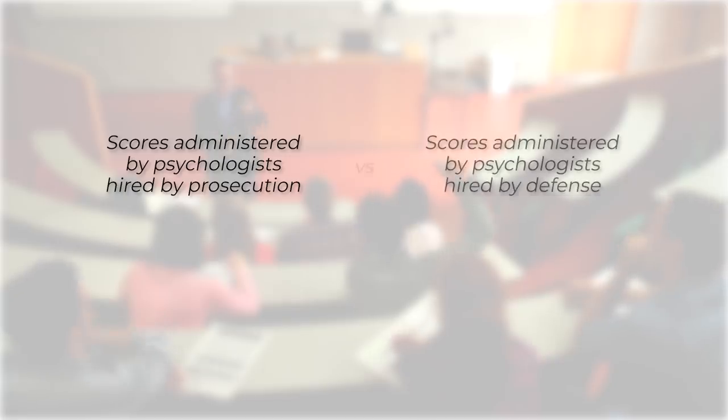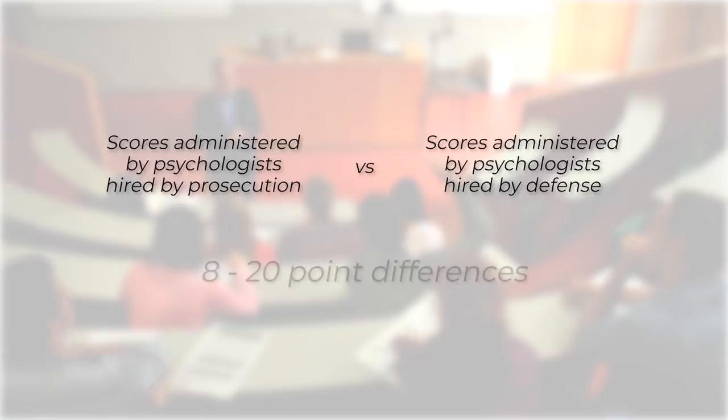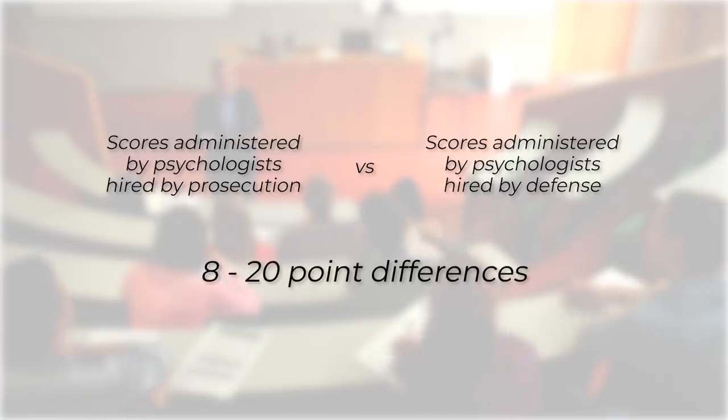Dr. Hare himself questioned the effectiveness of the test in certain circumstances, and there is evidence that test results vary depending on who administers it. Daniel Murray, a professor at the University of Virginia, studied scores used in a court of law. He looked at scores administered by psychologists hired by the prosecution as well as those hired by the defense, and found there were often 8-point differences in scores, and sometimes up to 20-point differences. So where do we go from there? What is the best method of assessing psychopathy in an individual, and when is it even appropriate? I asked this of Dr. Lee as well.